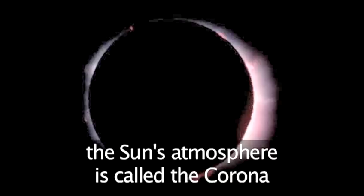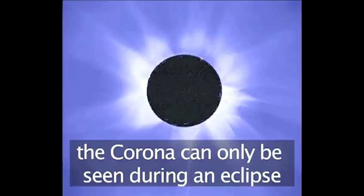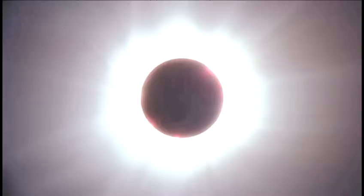The sun has an atmosphere. It is known as the corona and it is a million times less bright than the surface of the sun. It is only visible during total eclipse.